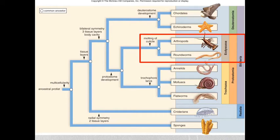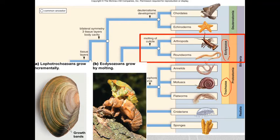We have just walked through the Lophotrochozoans, and now we move into the Ecdysozoans. The Lophotrochozoans grow incrementally — looking at a bivalve, we can see different layers, like growth rings on a tree, so they grow continually and never have to shed their shell. The Ecdysozoans, by contrast, are categorized by the loss of their cuticle — this is the organism emerging from its old cuticle.